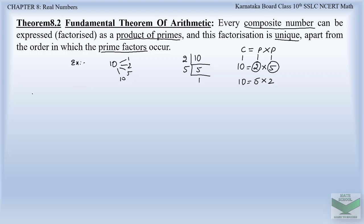That is, 10 can also be written as 5 into 2. The order can be changed, but the prime factors occurring will be unique. This is what the theorem says: every composite number can be expressed as the product of primes, and this factorization is unique apart from the order in which they occur. Now let us take another example — 32,760 — and find the prime factors of this number.